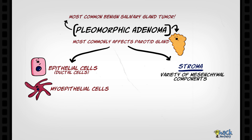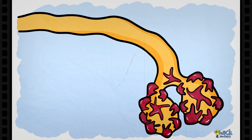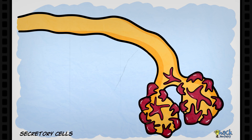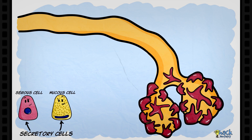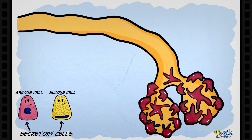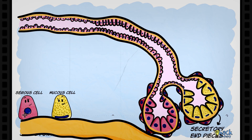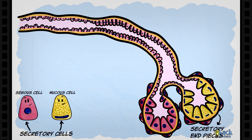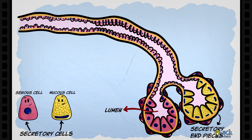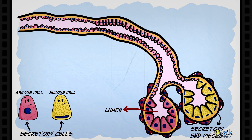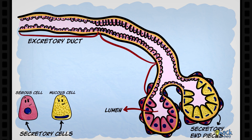To understand this better, let's recap the basic structure of salivary glands. Secretory cells present in salivary glands are of two types: the serous and the mucous cells. These secretory cells are housed in secretory end pieces, and serous and mucous cells line the lumen of the secretory end pieces. These secretory end pieces are continuous with the main excretory duct of the salivary gland through many intermediary ducts.